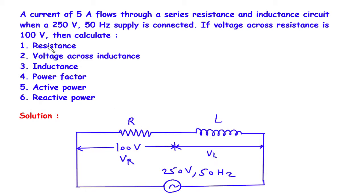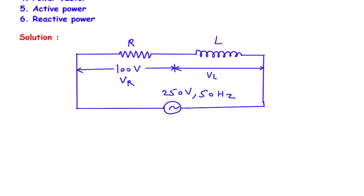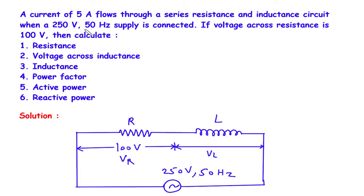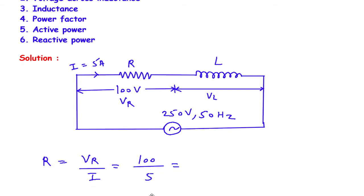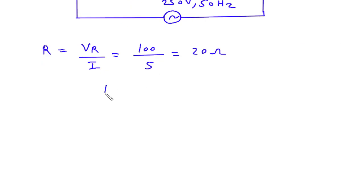First of all we have to find the value of resistance. The value of current is also given: I is equal to 5A. By using Ohm's law we can find the value of resistance. Resistance R is equal to Vr divided by I. The value of Vr is 100 and the value of current I is 5. So R is equal to 20 Ohm.